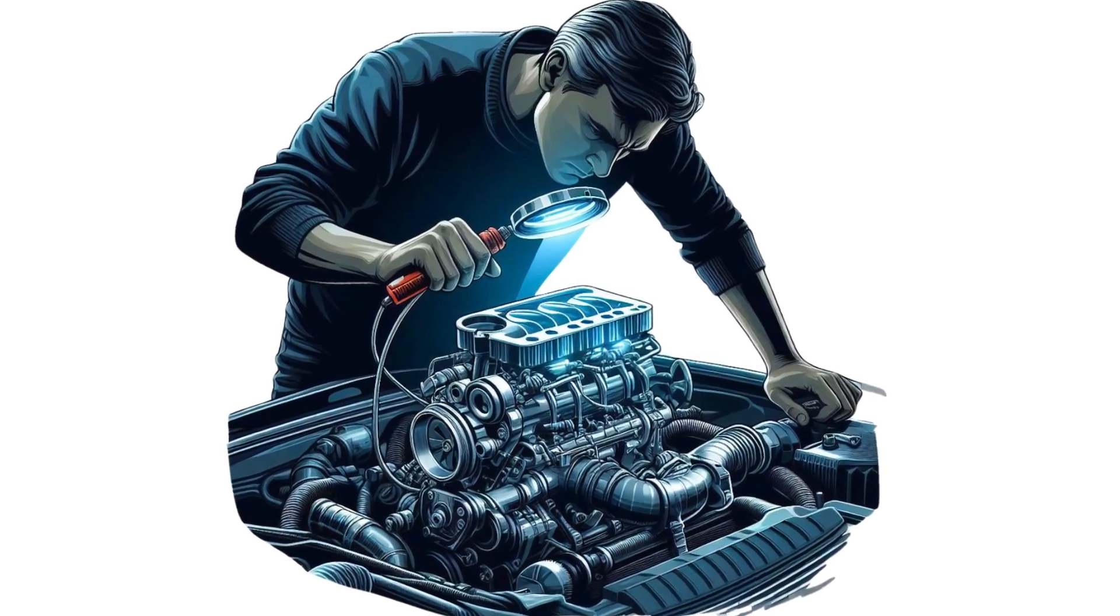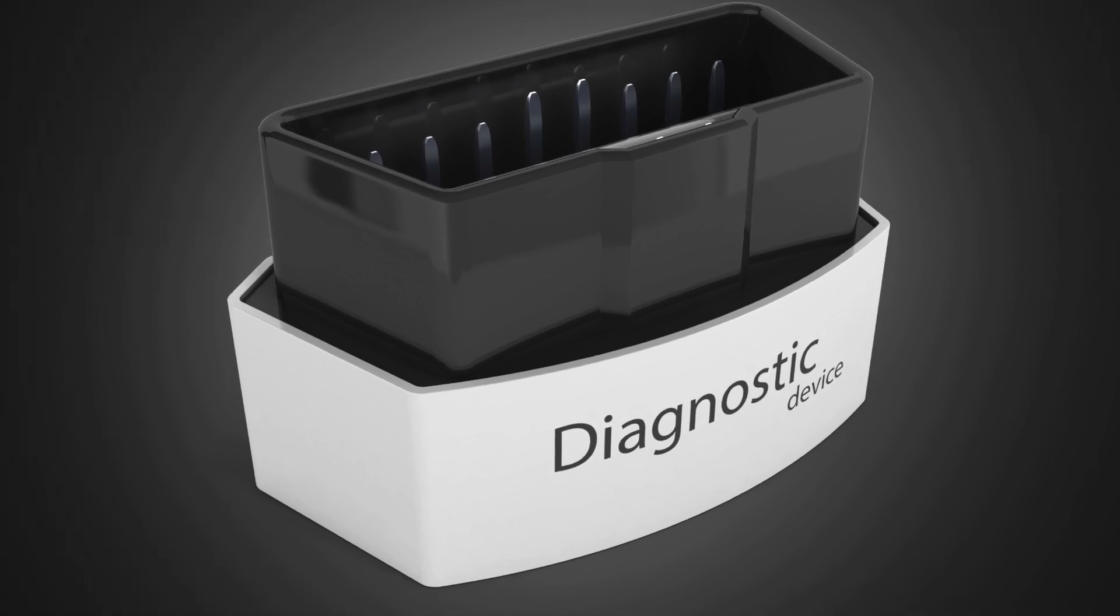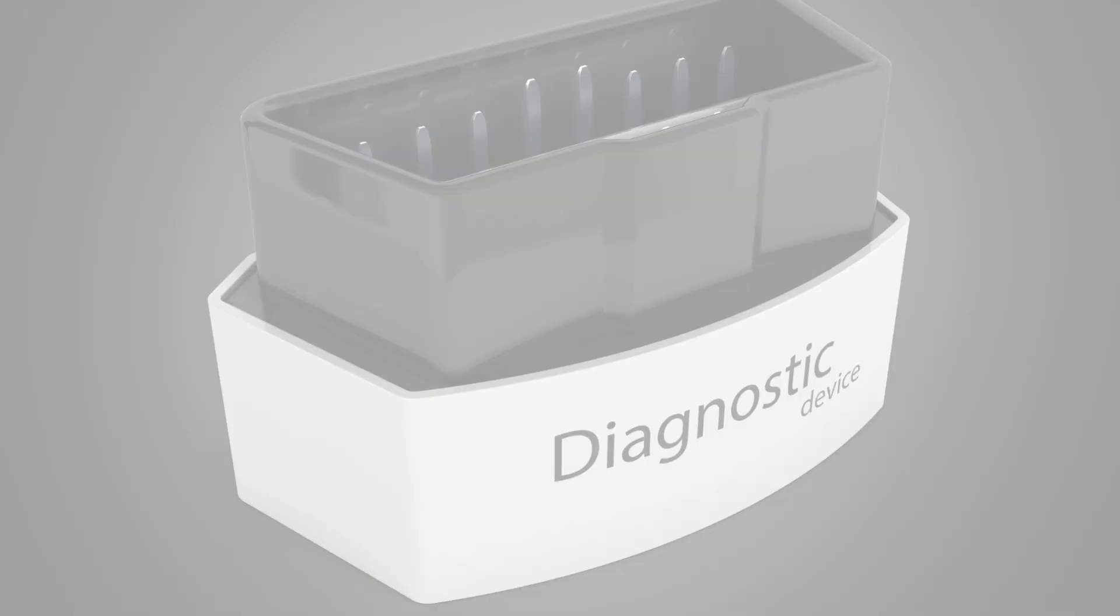Now, let's discuss how to test a dirty throttle body. First, use the OBD2 scan tool to look for any trouble codes related to a bad throttle body.